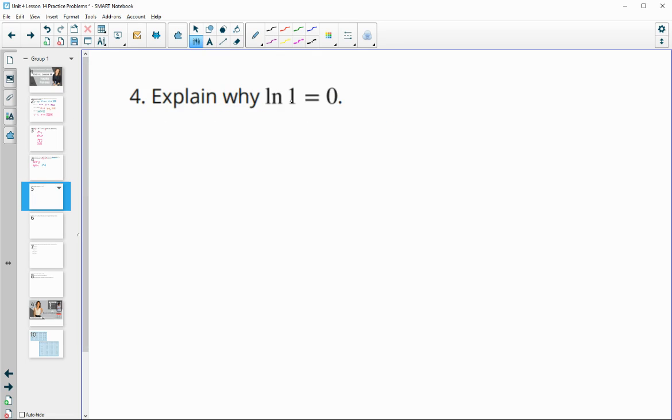Number four, explain why the ln of 1 equals 0. Well remember this is a base e, so we're really saying e to the 0 power equals 1, and anything to the 0 power is 1. So this is a true statement.